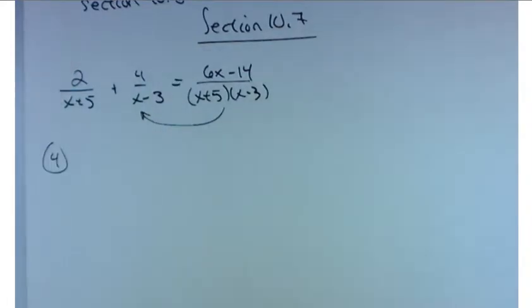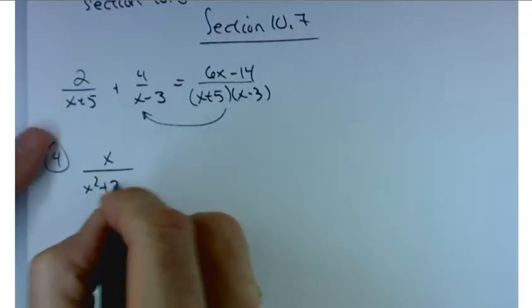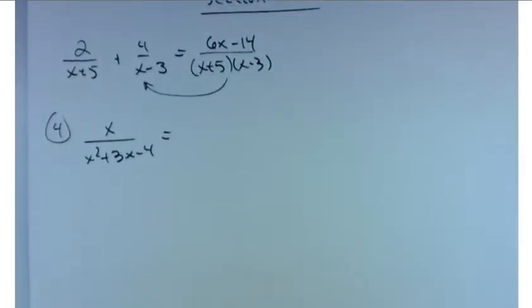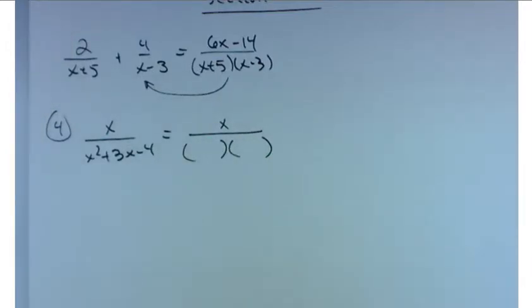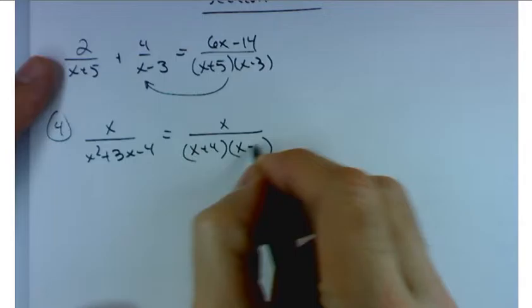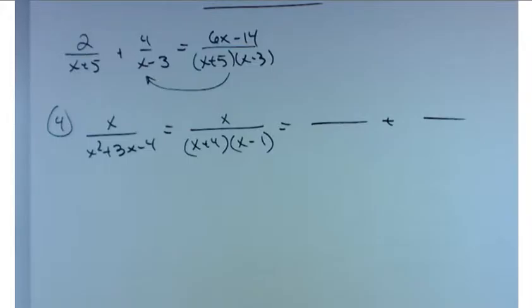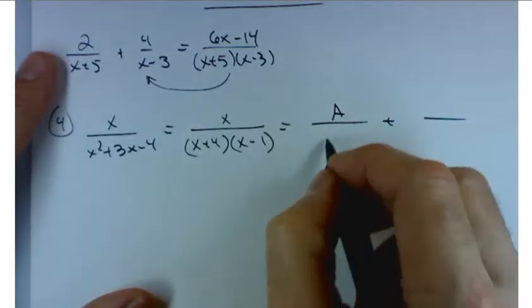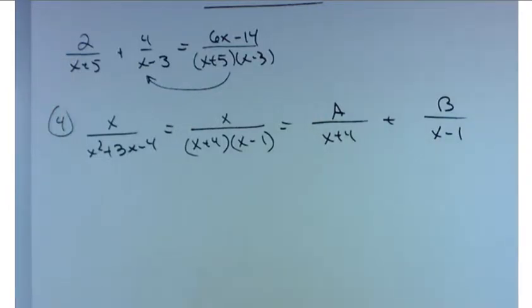In fact, we'll just do problem number four, which just asks us for the setup. So problem four looks like this: we've got x over x squared plus 3x minus 4. And then why don't we decompose that into two partial fractions? Well the first step that you're going to need to do is factor this and figure out what are the linear factors that go into this. So what's the factorization of that denominator? x plus 4 times x minus 1. Now in terms of decomposing that, I know I'm going to have something, call it an A over the x plus 4 term and something else, a B over the x minus 1 term.